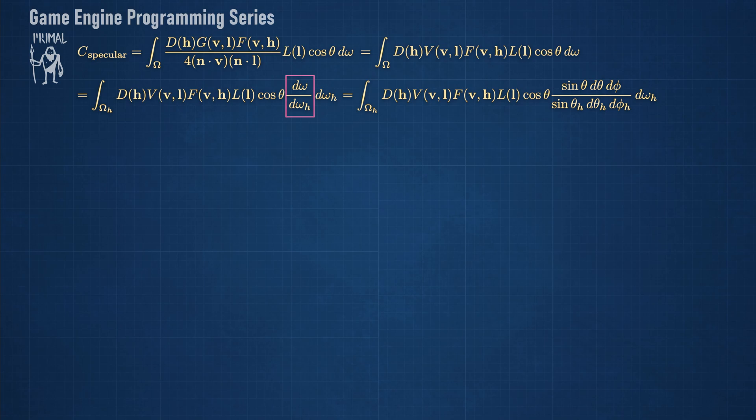Here we take the derivative of d omega with respect to d omega_h. This is a measure of how much d omega changes when d omega_h changes. Calculating the primitive with respect to d omega_h will revert this part again.